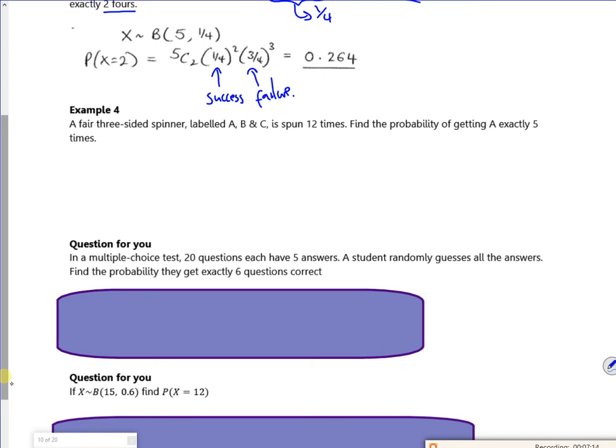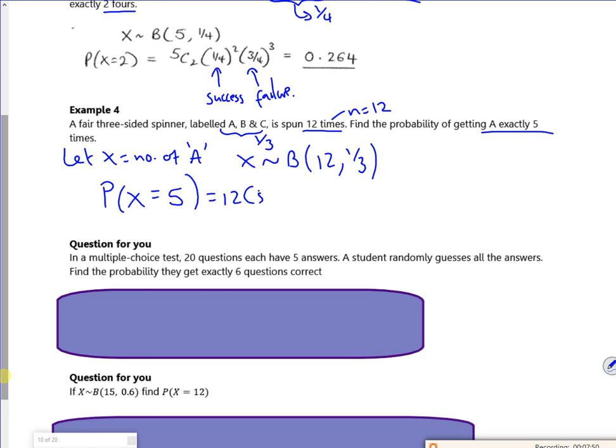So a fair three-sided spinner. It's spun twelve times, so n is twelve. Find the probability to get exactly A five times. So we're assuming if it's fair, the probability is a third. So we should say, let X equal the number of A's we get. And then X follows the binomial, twelve, and a third. I want the probability that X is equal to five. So 12C5. I'm going to do it as failure first. So if I succeed five times, I fail seven times. So that's two thirds to the power of seven. And then one third to the power of five. It doesn't matter. As long as you get the powers right, it doesn't really matter. They've done success and failure, but that properly matches the binomial formula. So that's 0.191.